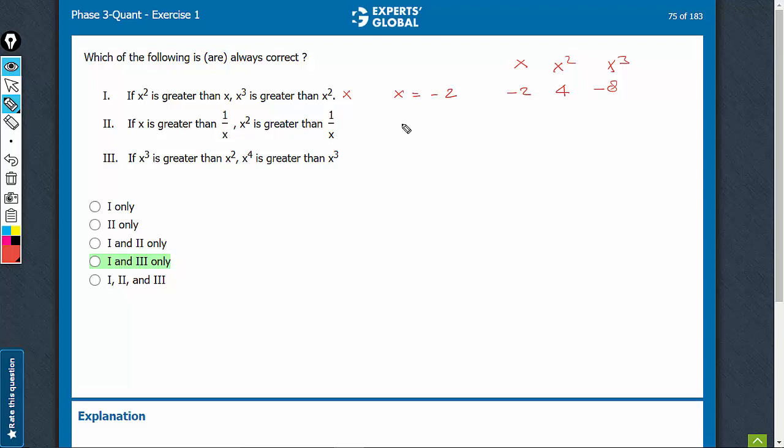x is greater than 1 upon x when x is a big positive number, such as x equals 2. So the value of x is 2, 1 upon x is 1 upon 2, and x squared is 4. In this case, we get yes.